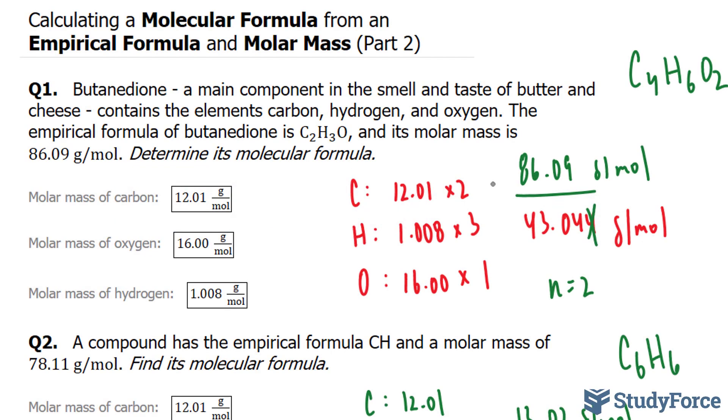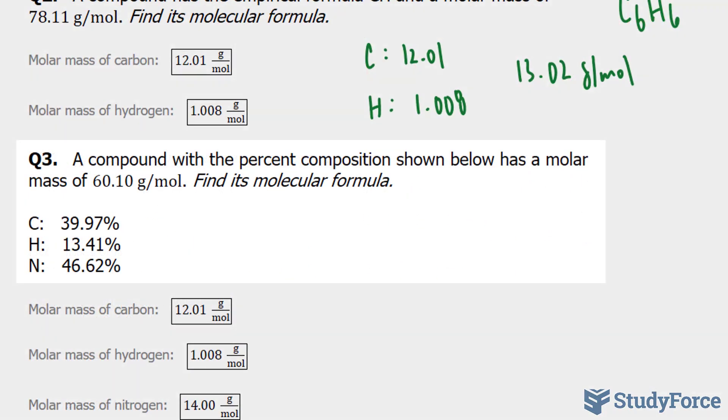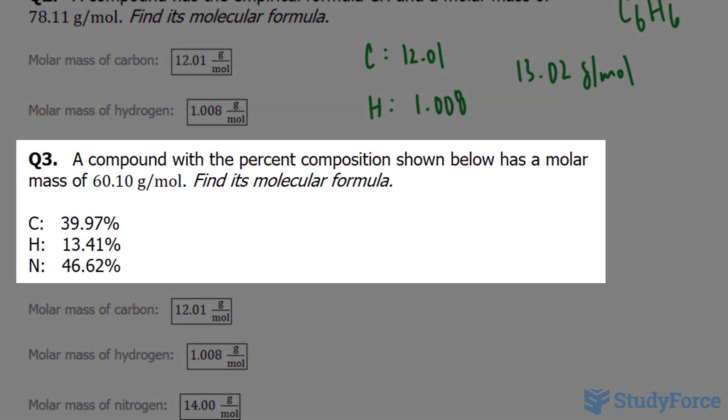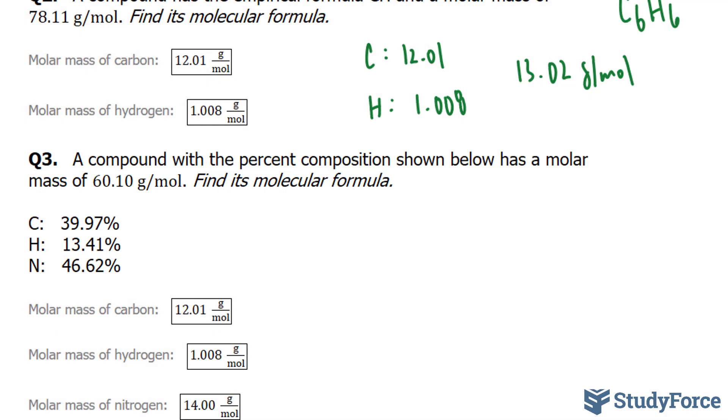In part two of this lesson, we'll continue answering our last question, which reads: a compound with the percent composition shown below has a molar mass of 60.10 grams per mole. Find its molecular formula. So we have C, H, N, and our formula will therefore look like this at some point: C,